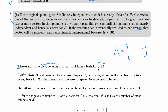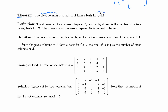The pivot columns of a matrix A form a basis for Col(A), the column space. The definition of dimension: the dimension of a non-zero subspace H, denoted dim(H), is the number of vectors in any basis for H. There can be many different bases for one vector space, but they all have the same number of vectors. The dimension of the zero subspace — containing only zero — is defined to be zero.